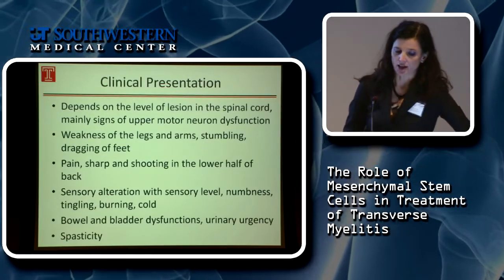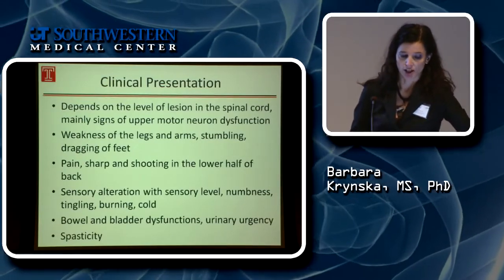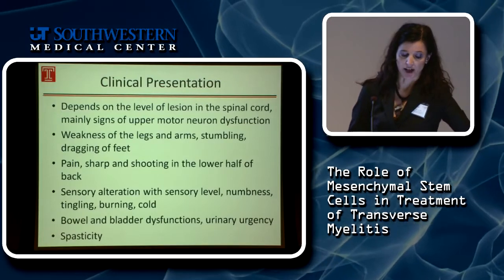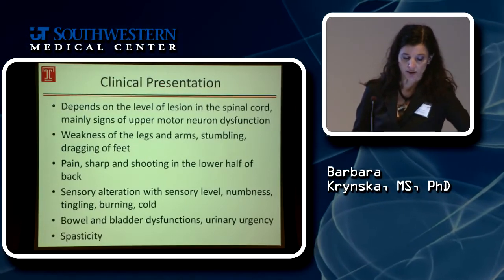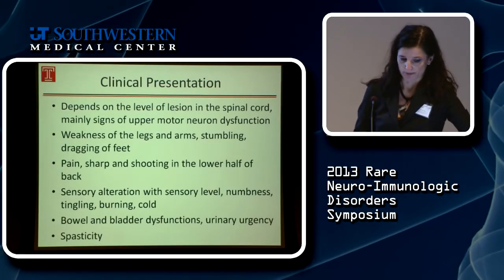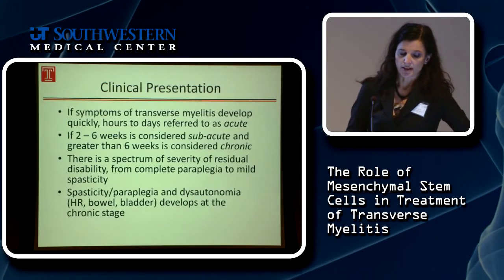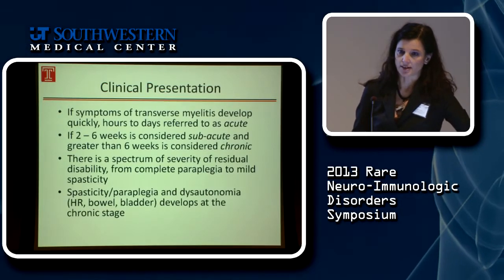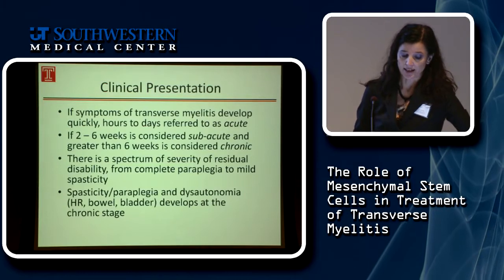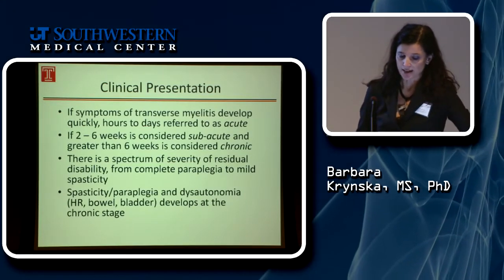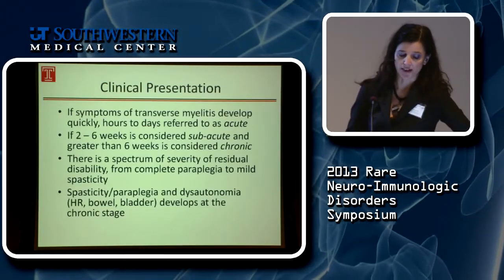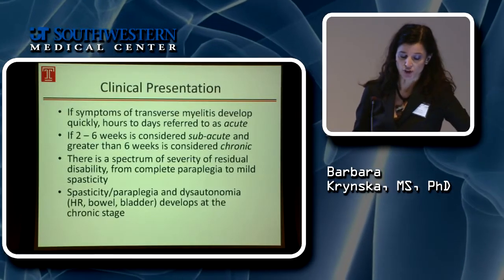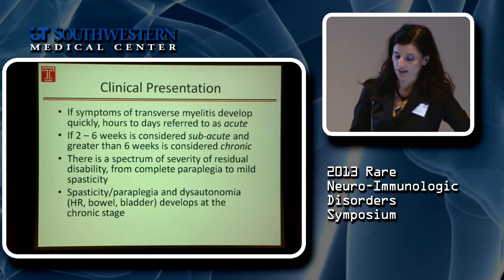Clinical presentation depends on the level of the lesion in the spinal cord and mainly includes signs of upper motor neuron dysfunction, with symptoms of weakness in the legs such as dragging the feet, along with sharp shooting pain, sensory alteration, and bowel and bladder dysfunction. If symptoms develop quickly — hours to days — it is referred to as acute. Two to six weeks is considered sub-acute, and greater than six weeks is considered chronic. There are many people in the US living with residual disability ranging from complete paraplegia to mild spasticity, which develops in the chronic stage.